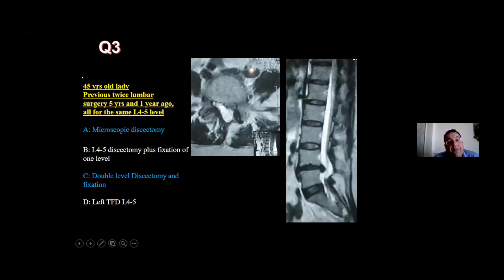Another case: a 45-year-old lady with two previous lumbar surgeries five years ago. What are the options for treatment? Should we go for macroscopic discectomy, fixation with L4-5 discectomy, double-level discectomy or fixation, or use the transforaminal approach? Transforaminal decompression directly at the root is always a fresh approach, and this is one big advantage of that route.